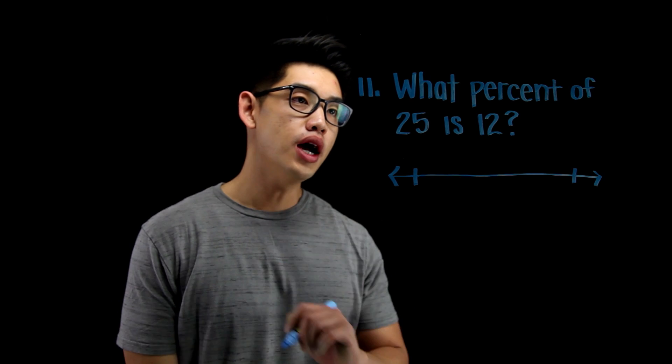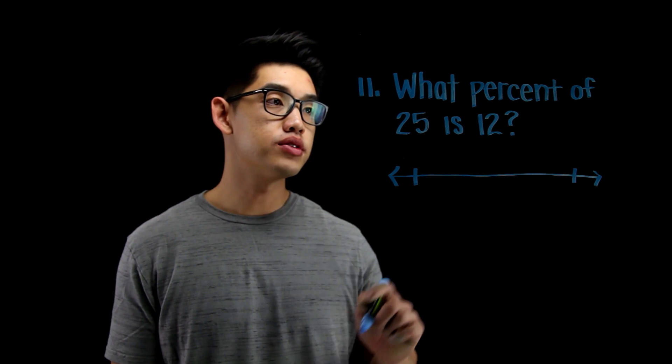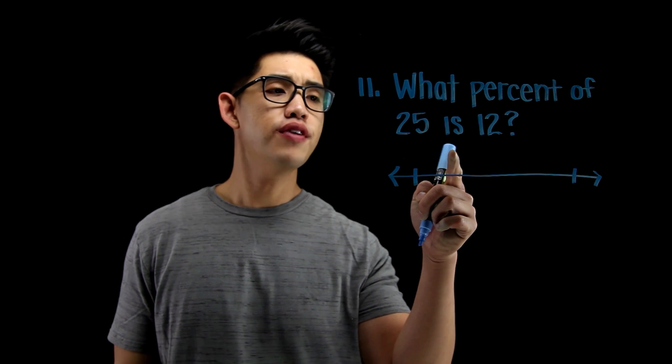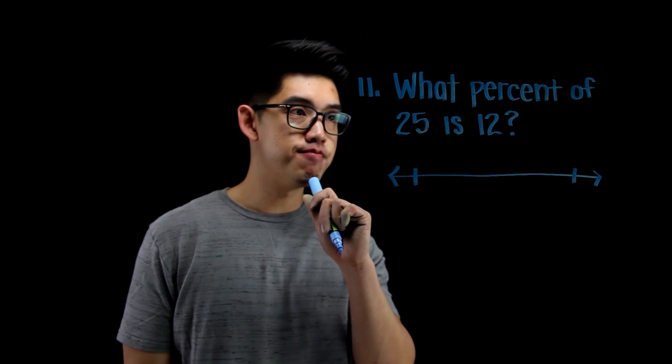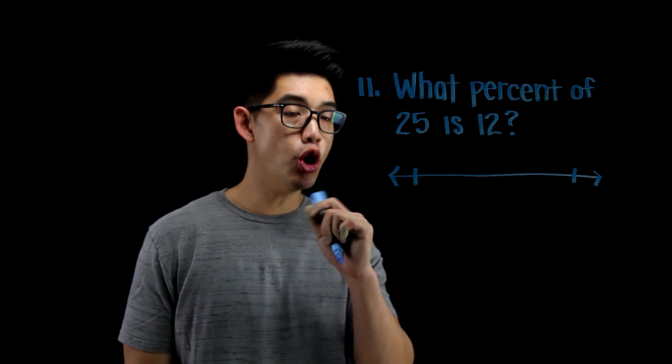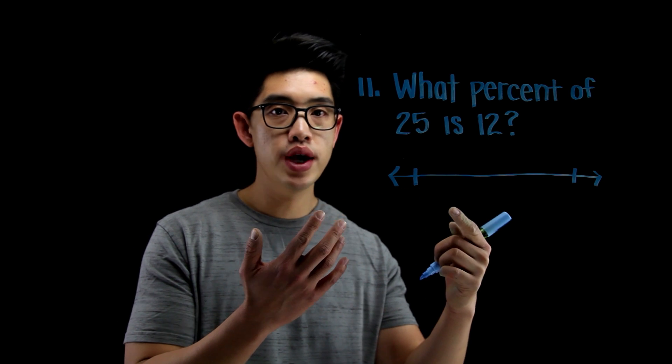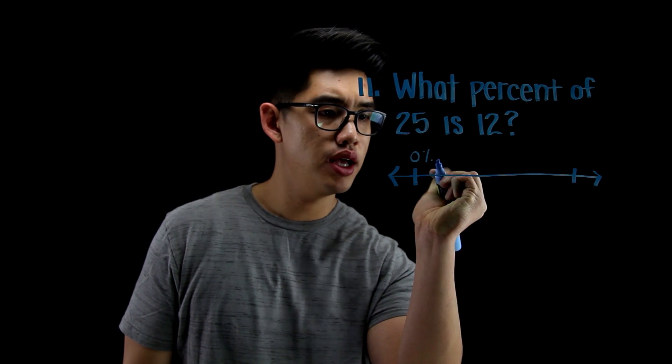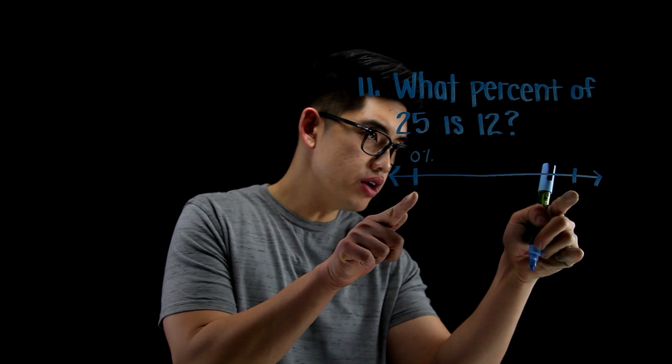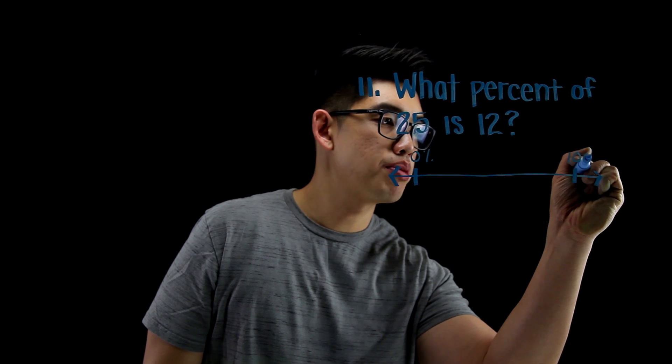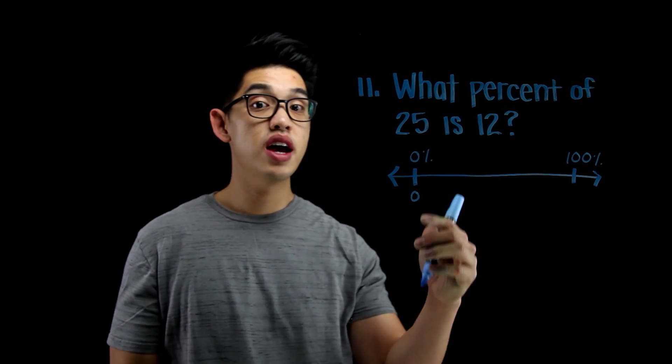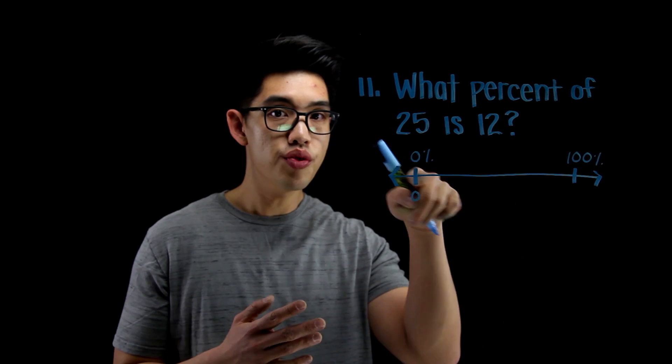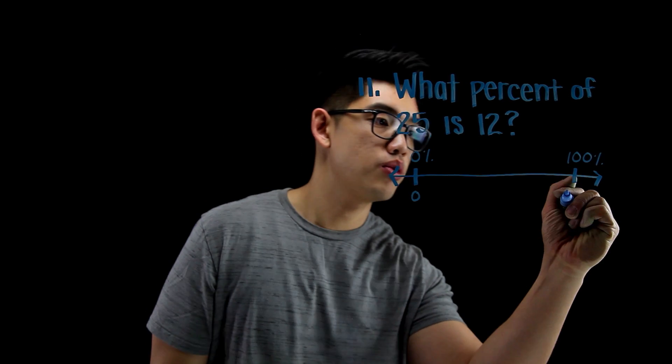Alright, for number 11, we want to find out what percent of 25 is 12. Let me see. I can do it using a number line method. What I can say is, this is 0% right here. And from here, all the way over there, this is going to be 100%. And I know that this is going to be 0. And we know that 100% of this whole thing is 25. So I'm going to write 25.